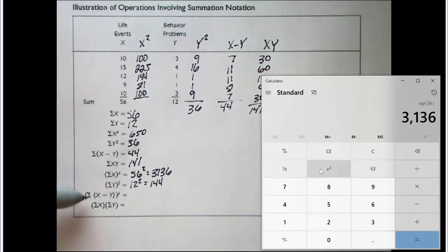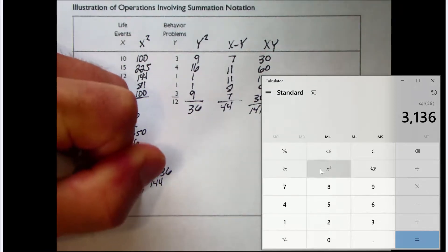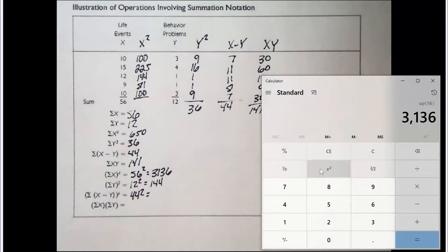Let's look at the next one. This has the sum of the quantity X minus Y, that entire quantity squared. We already know the sum of the quantity X minus Y, because we computed that right here. This is the sum of the quantity X minus Y. This is saying take that entire value and square it. So we have 44 squared. Let's see what that equals. 1,936.